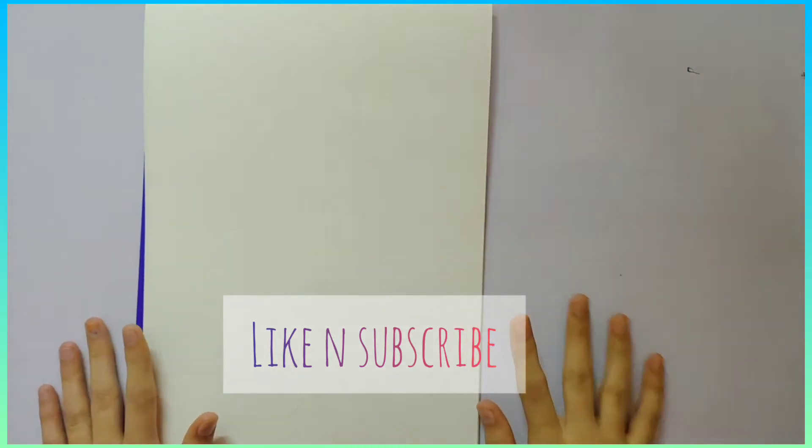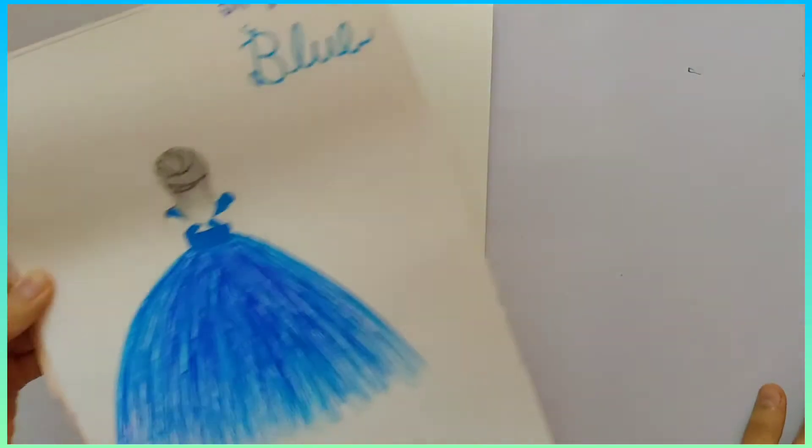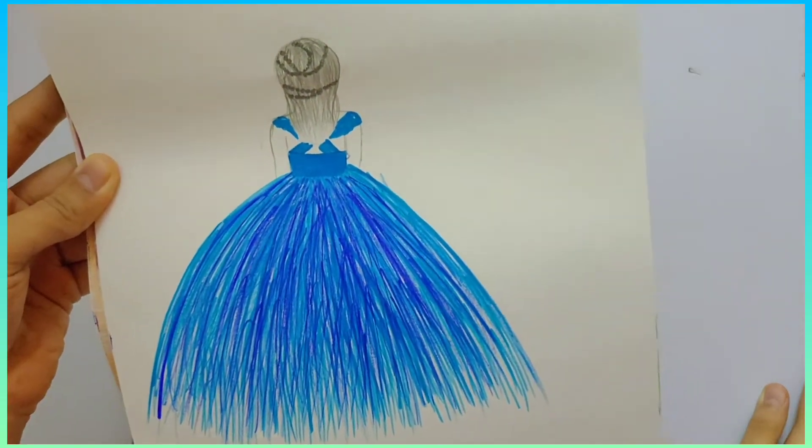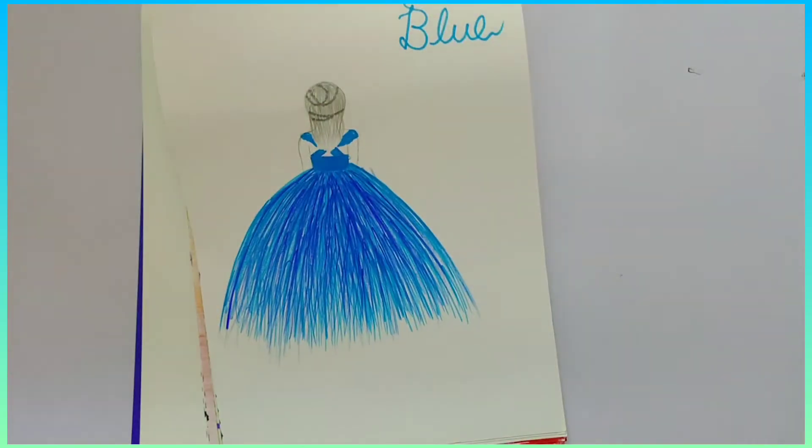Hey guys, welcome again to my channel. Today we are going to draw a very beautiful girl in a blue dress, and the dress is going to be shiny and shimmery. I've made it before and it turned out very well, so I thought why not show you all how to paint this. Let's get started.